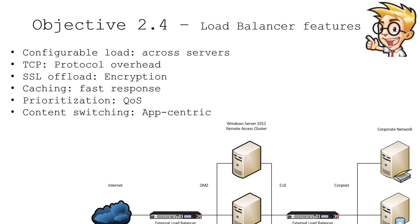Load balancers are quite commonly known to cache information across the network so that requests don't slow down users or cause congestion. If there's a common website or file that people access frequently, the load balancer may already have it cached so it doesn't have to send requests all the way to that server every time. We can also perform advanced configurations for traffic going to load balancers — prioritizing certain web pages or applications, or directing certain applications to specific servers. This content switching capability allows load balancers to optimize communications and have them respond best on the network.